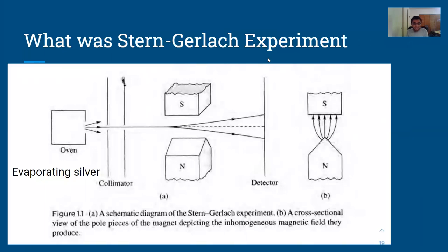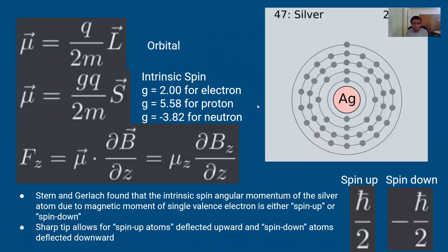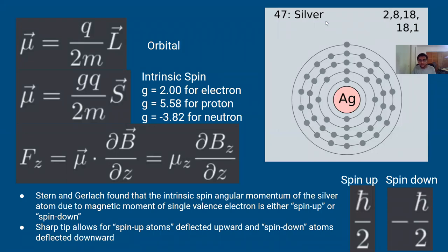In the Stern-Gerlach experiment, silver is evaporated in an oven, passed through a collimator to create straight rays, and then sent through magnets with a sharp tip. On the detector you see spin-up and spin-down particles. Silver was chosen because of its spin and orbital angular momentum properties — it has only one valence electron, which is the main contributor to the intrinsic spin angular momentum. All the other electrons have negligible contribution to spin angular momentum, instead contributing to orbital angular momentum.